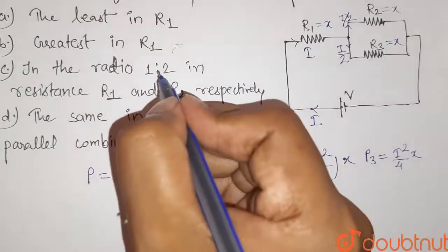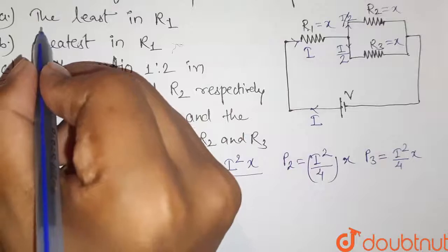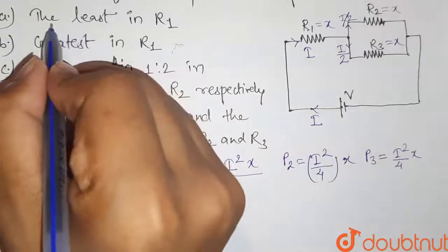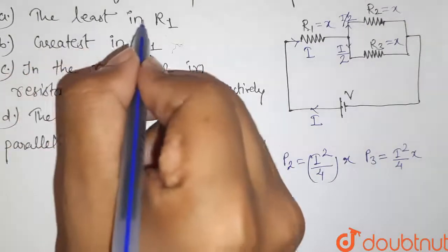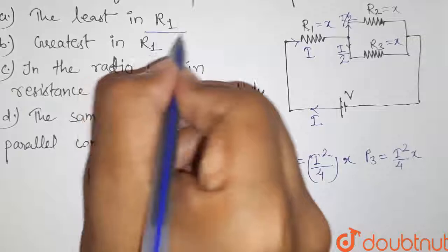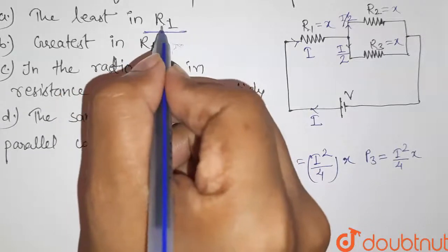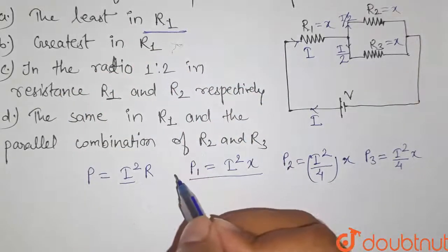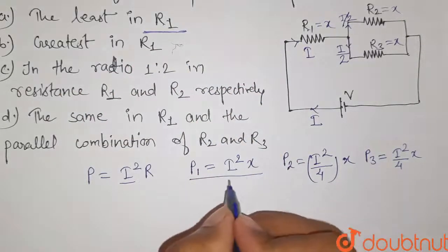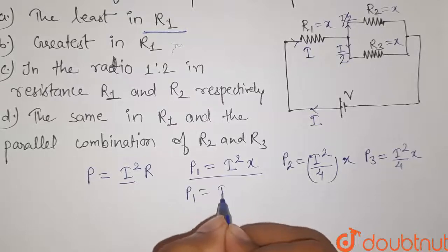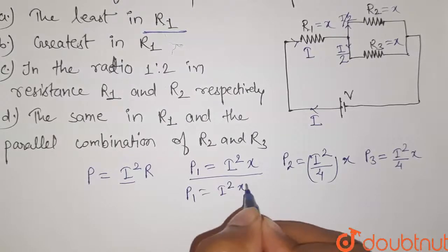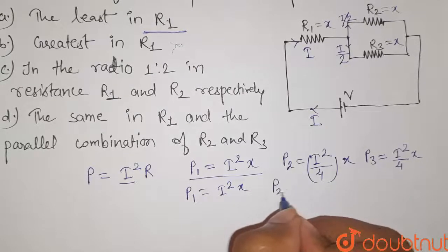Now let us read the options here. The first option is the power dissipated is the least in R1. So it is given that the power dissipated is least in R1, but here we can see that this P1 is the greatest value among these three.